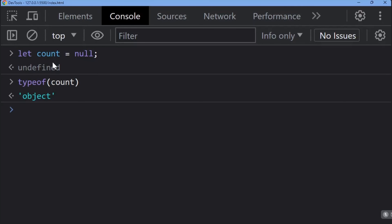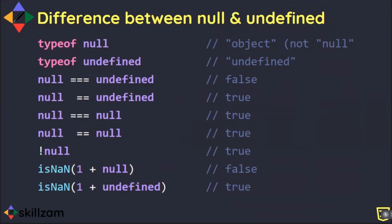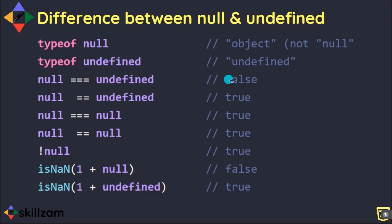Now let's understand the difference between null and undefined. typeof null returns 'object', whereas typeof undefined returns 'undefined'. A strict equality check (===) between null and undefined returns false because they are different. Only the loose equality (==) returns true — that compares values only, not data types. Triple equals (===) compares both the data type and the value, so it returns false.